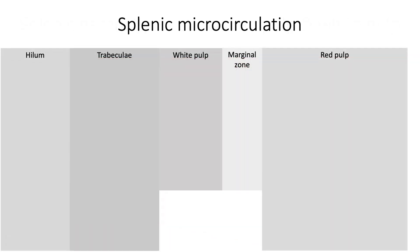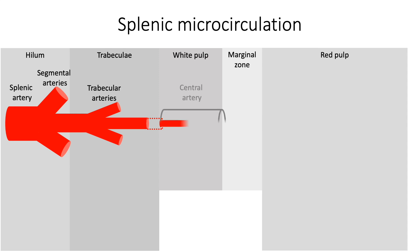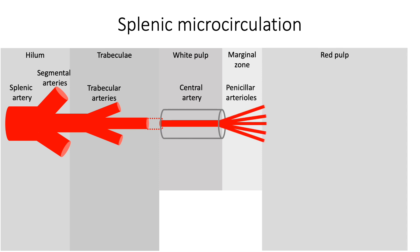Let us first consider the splenic microcirculation. Splenic artery enters at the hilum and divides to form multiple segmental arteries. These then give trabecular arteries as their branches, which travel with the trabeculae. They undergo multiple levels of branching until they form the central artery in the white pulp, surrounded by lymphocytes. These central arteries then divide into 15 to 20 penicillar arterioles in the marginal zone, and the blood in these penicillar arterioles will enter the open circulation of the red pulp.